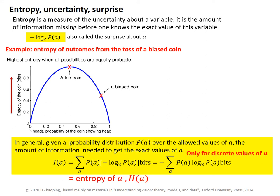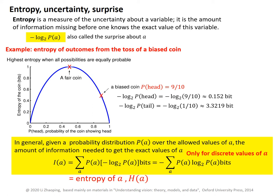The vertical axis marks the entropy for this coin. Let's first look at the biased coin. The negative log base 2 of the probability for head is about 0.15 bits. So when you toss this coin and get a head, it is no surprise — you can guess that head is the most likely outcome. So this 0.15 bit is a small amount of uncertainty about a head outcome. The negative log base 2 of the probability for tail is however much bigger: 3.32 bits. It is much more surprising that you get a tail outcome, as you do not expect it as likely.